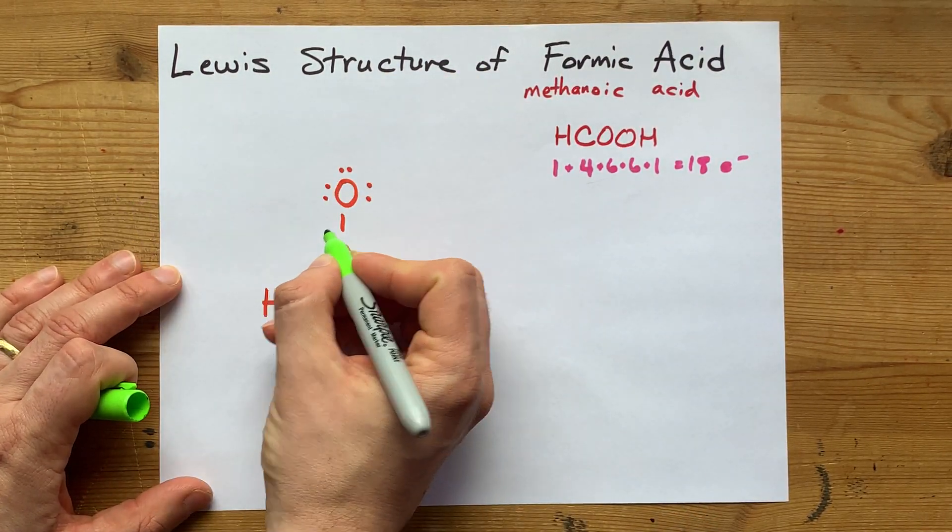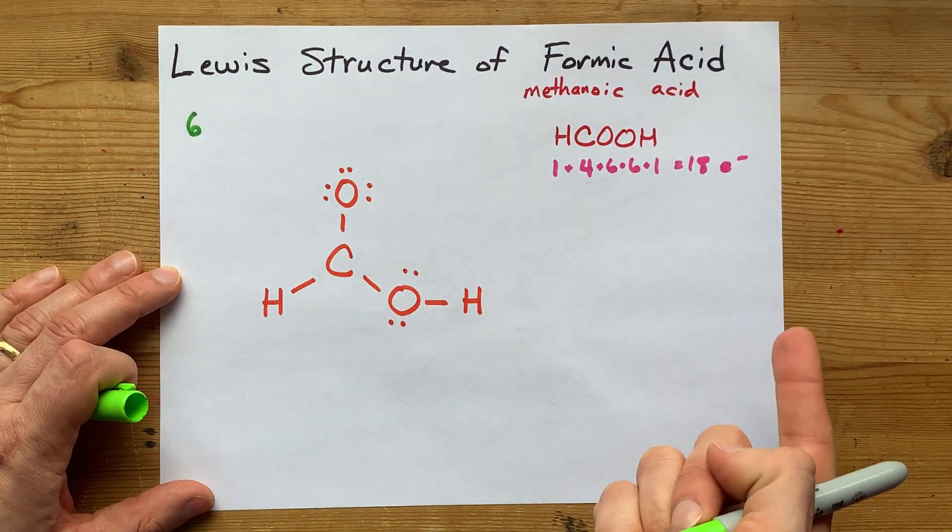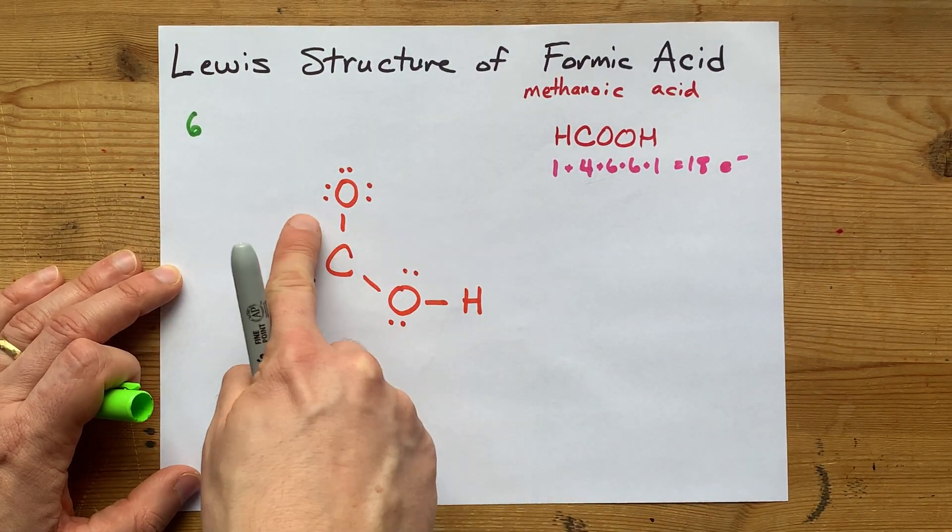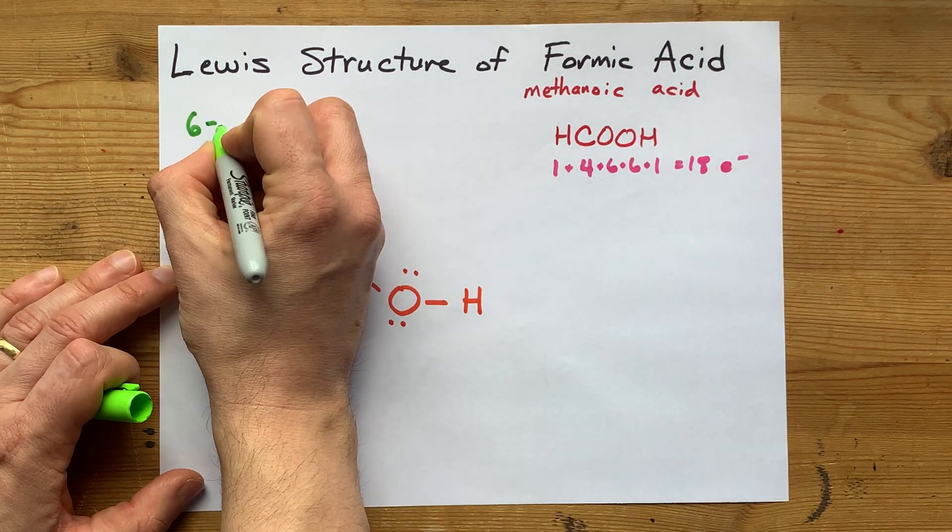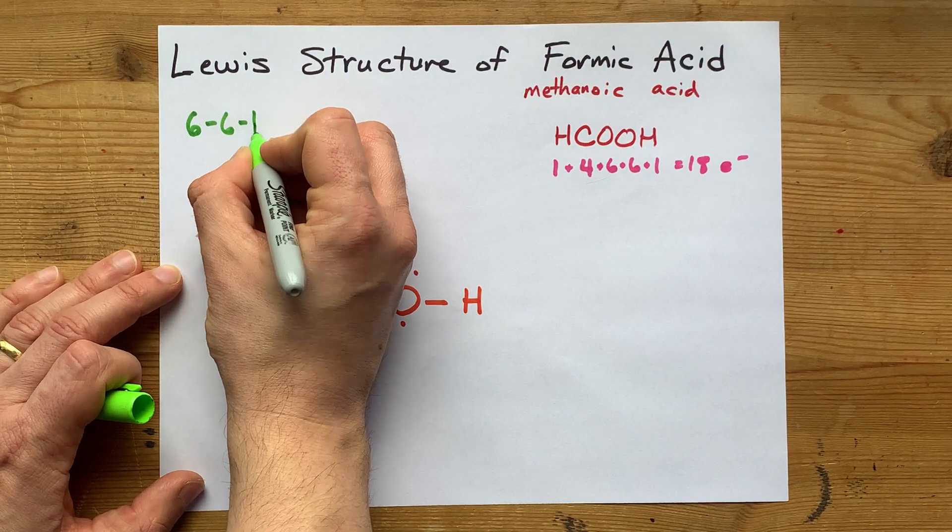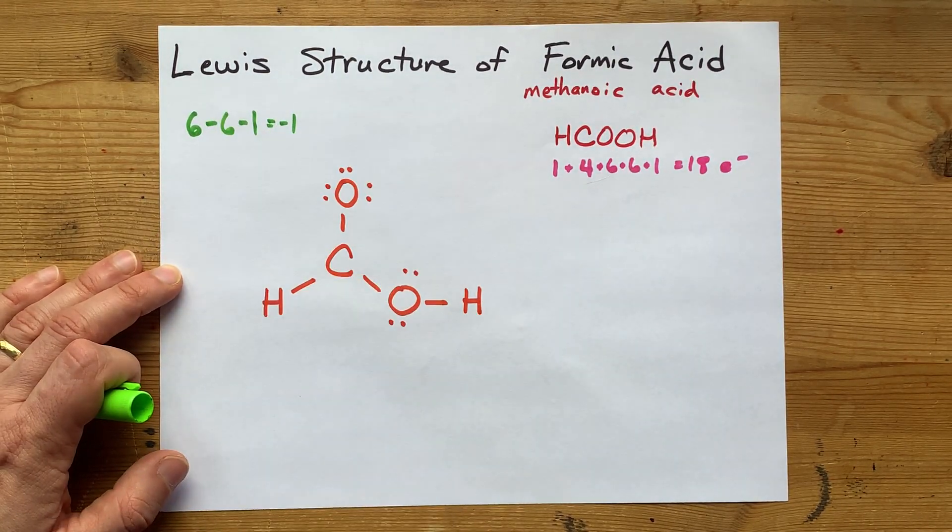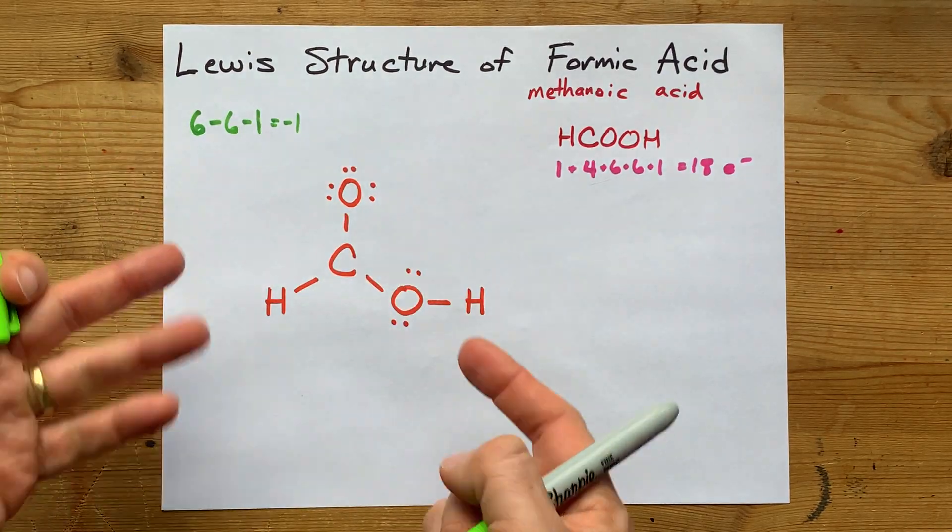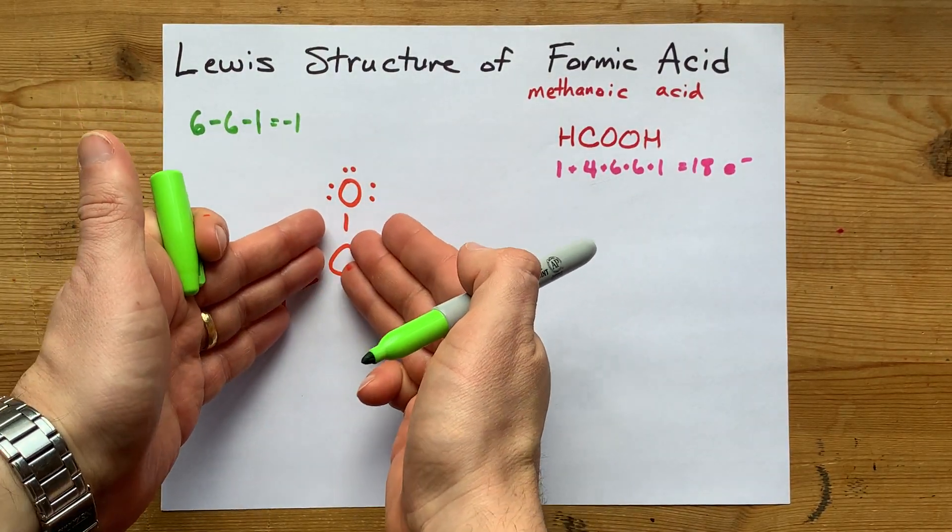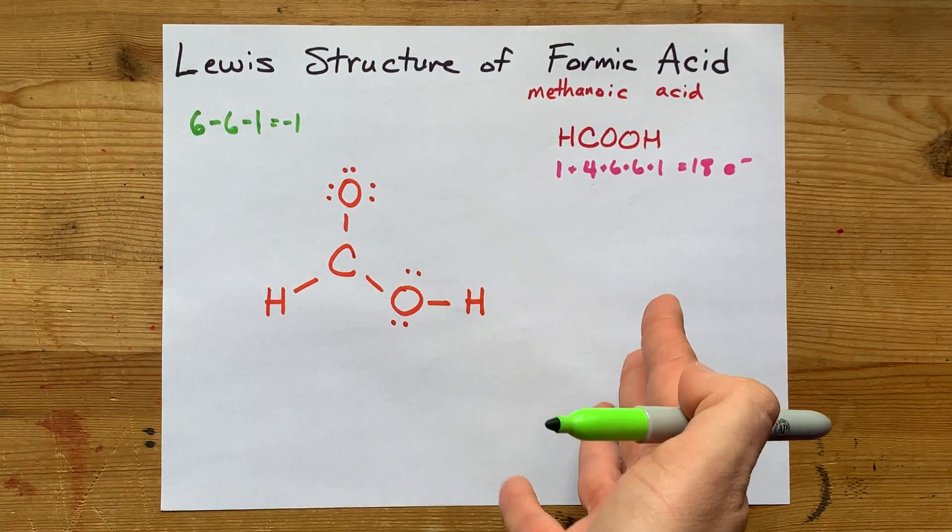The formal charge on this oxygen here, or any atom, is calculated by taking the number of valence electrons that atom brought with you, minus the number of dots, minus the number of lines around it. So, six minus six is zero, minus one is negative one. The more negative the formal charge, the more likely it is to donate these electrons to the cause of completing the octet of an adjacent atom.